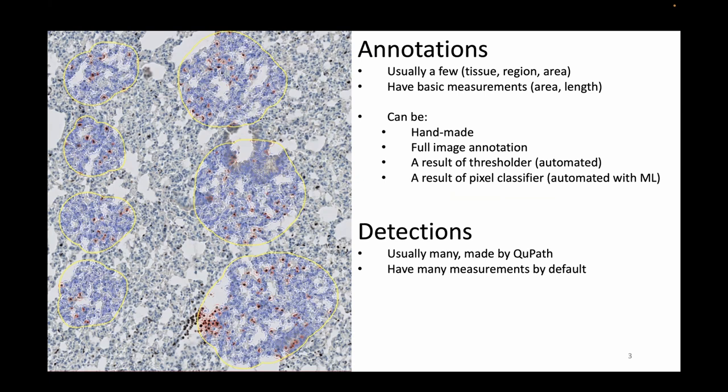Annotations can be handmade, you can make full image annotations, they can be a result of a thresholder — which is what we did in the previous section — or a result of a pixel classifier, which is automation with some machine learning. Detections are going to be cells, tiles, and super pixels.